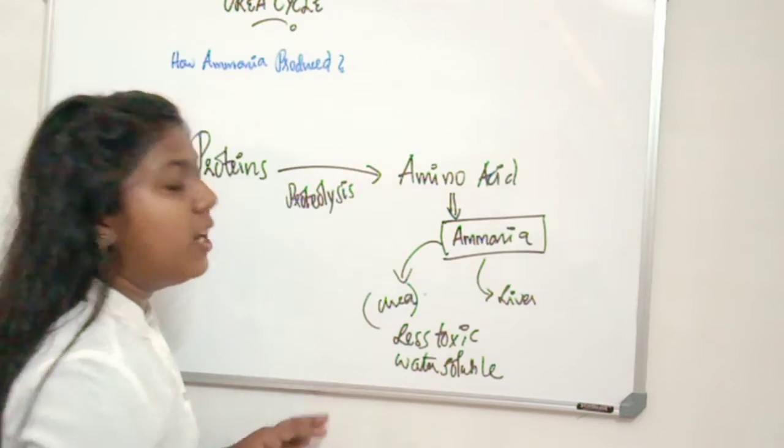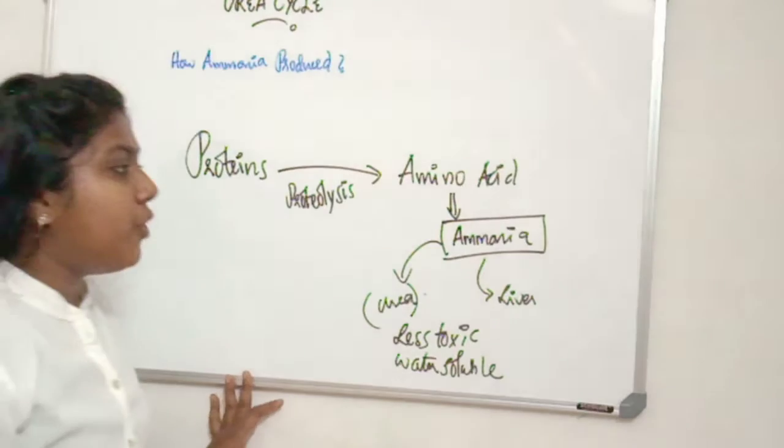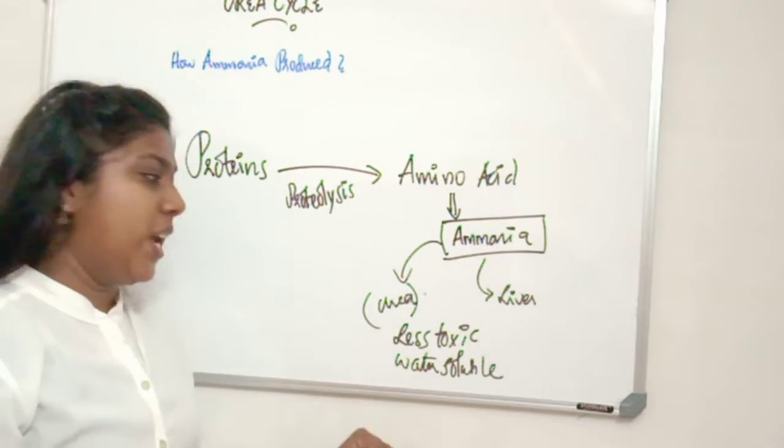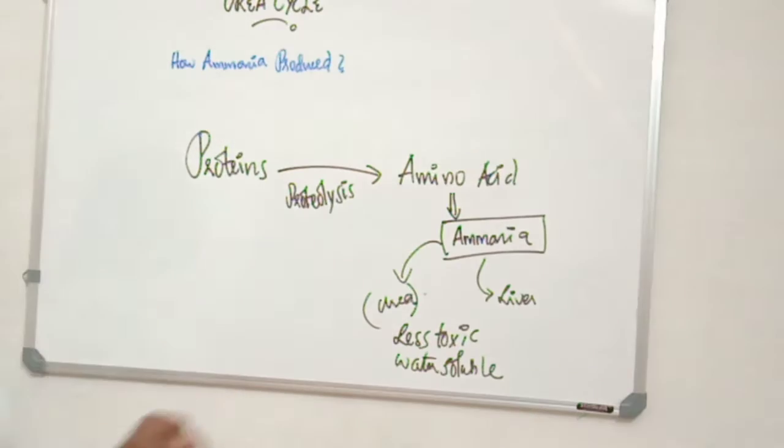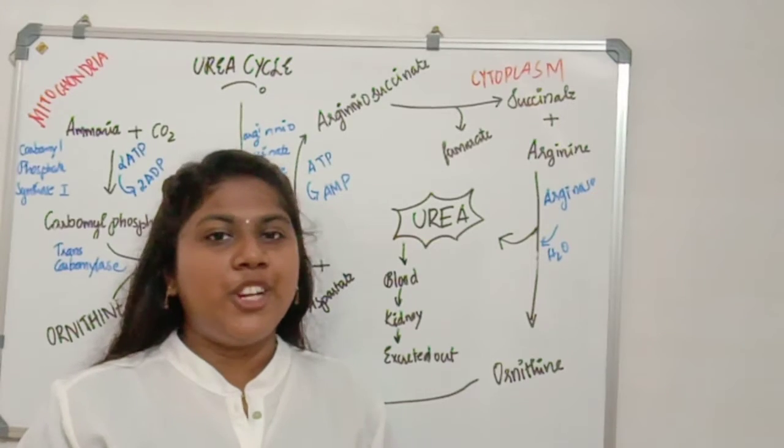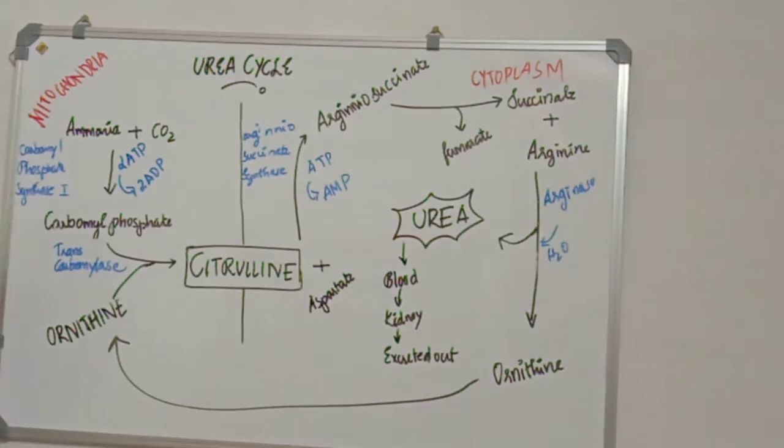The conversion of ammonia to urea is known as urea cycle or simply the synthesis of urea. Let's look at the details of urea cycle. We are going to look at the detailed view of urea cycle. We already said that ammonia present in the liver gets combined with carbon dioxide. This step happens in mitochondria.